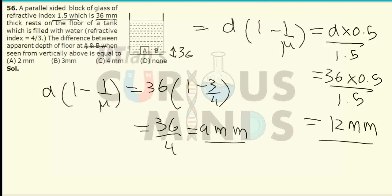So the shift in the apparent depth will be equal to 12 minus 9, which will be equal to 3 millimeter, which is equal to option number B.